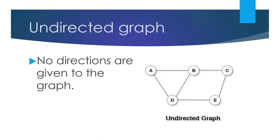Next is undirected graph. This is opposite to directed graph — no directions are given to the edges. This is an example of an undirected graph where a, b, c, d, e are the vertices and no directions are given.